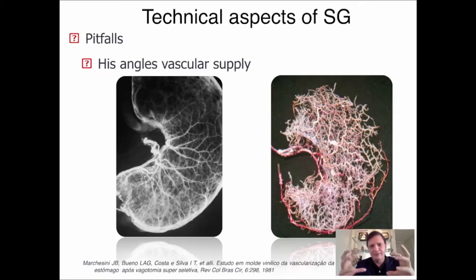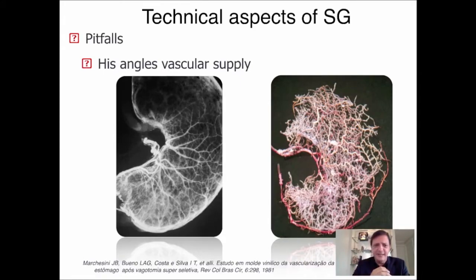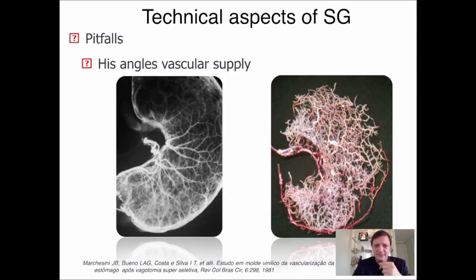right to left, five arterial branches except for one spot that is the His angle. Also some cadaver studies confirm these findings. It has three muscular layers instead of two.